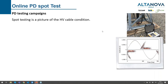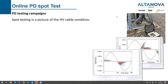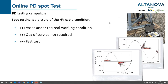We have to consider that spot testing is like a picture of the HV cable condition. There are several good points: the system works in real working conditions, so we have voltage, current, aging — everything is there. We don't need any out-of-service period. It's a very fast test because we can test three accessories in less than one hour, for example if you have a skid operator on site.